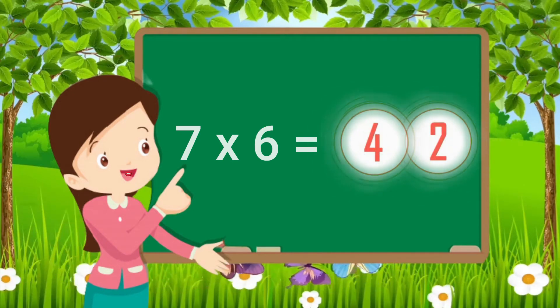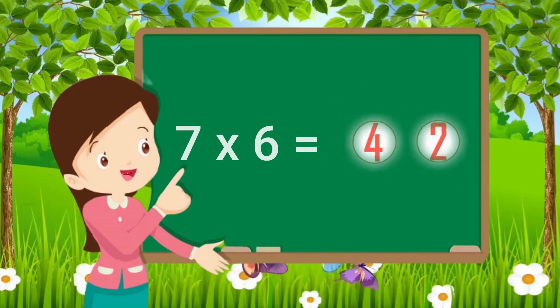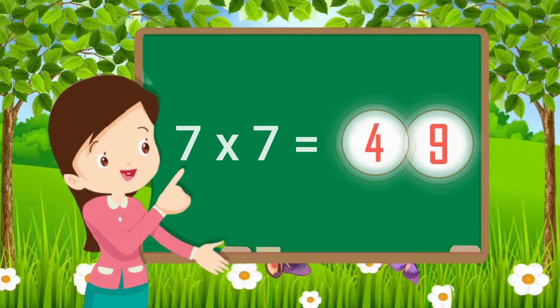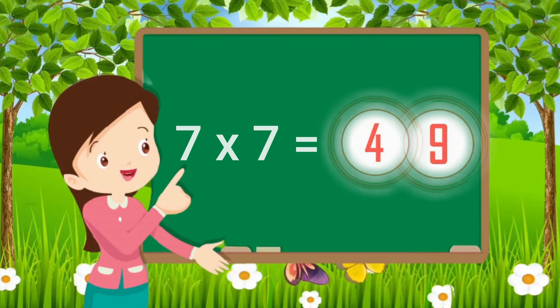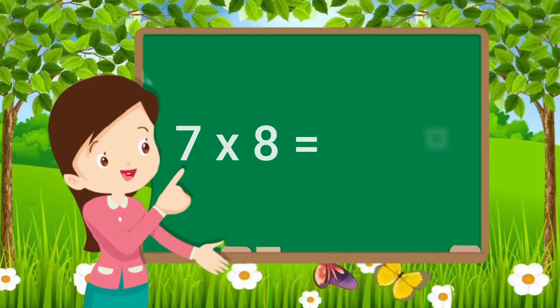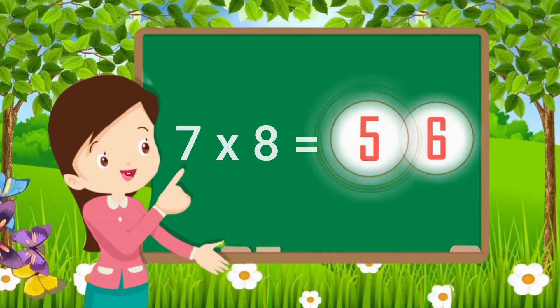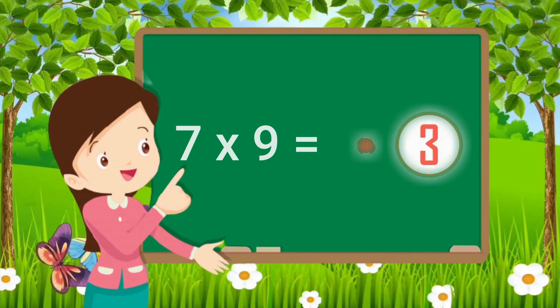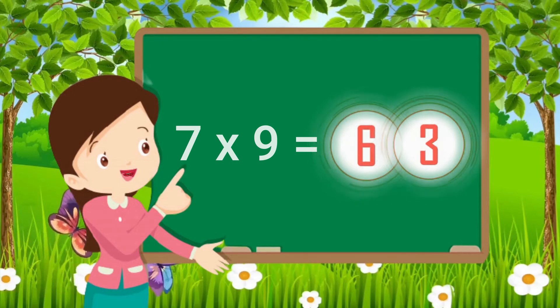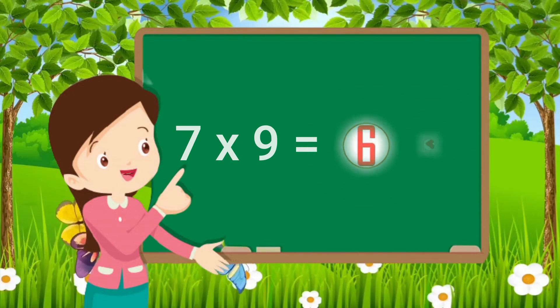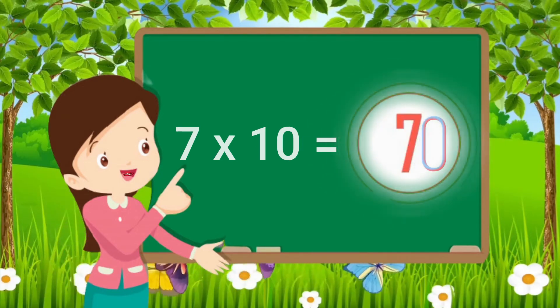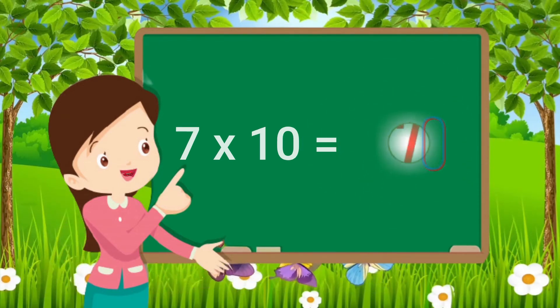Seven sixes are forty-two. Seven sevens are forty-nine. Seven eights are fifty-six. Seven nines are sixty-three. Seven tens are seventy.